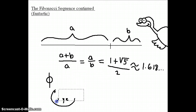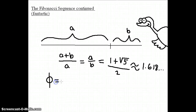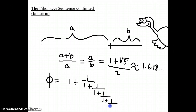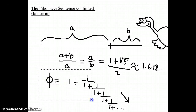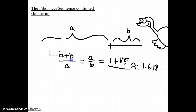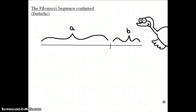Phi happens to have a very beautiful representation: you can represent phi as 1 plus 1 over 1 plus 1 over 1 plus 1 over 1 plus 1 over, and so on — going on forever. That's called a continued fraction in math. To me, that's kind of interesting — if I can't sit down and actually write this out, does it even exist in the real world? Is it a number that can be pointed to? That raises a lot of interesting mathematical and philosophical questions.